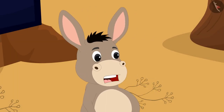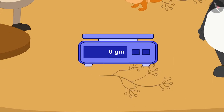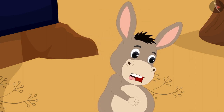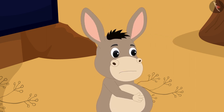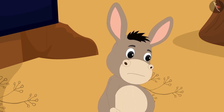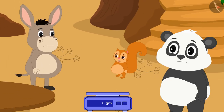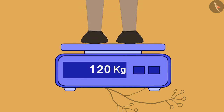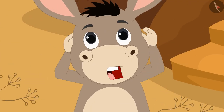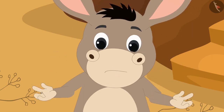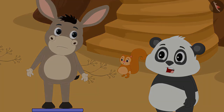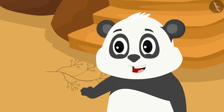Chanda, let's first measure our weight so that we can measure our weight again. After a few days, we can know whether our efforts have succeeded or not. Bholla told Golu and Chanda, First, I will weigh myself. Bholla stood on the weighing scale saying this. Oh my God! My weight has increased to 120 kilos. Bholla said in shock.